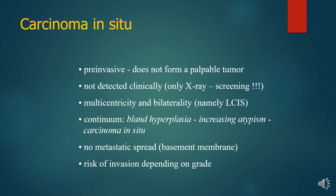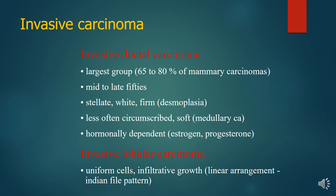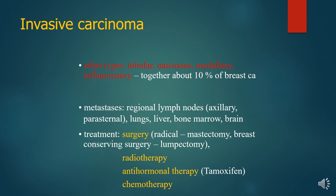Invasive ductal carcinoma is the largest group, typically presenting in the mid to late 50s. It presents as a wide, firm, less often circumscribed mass. Other types include tubular, mucinous, medullary, and inflammatory carcinoma. Metastasis occurs to regional lymph nodes — axillary and parasternal — and to lungs, liver, bones, and brain. Treatment includes radical mastectomy, breast-conserving surgery (lumpectomy), radiotherapy, hormonal therapy such as tamoxifen, and chemotherapy.